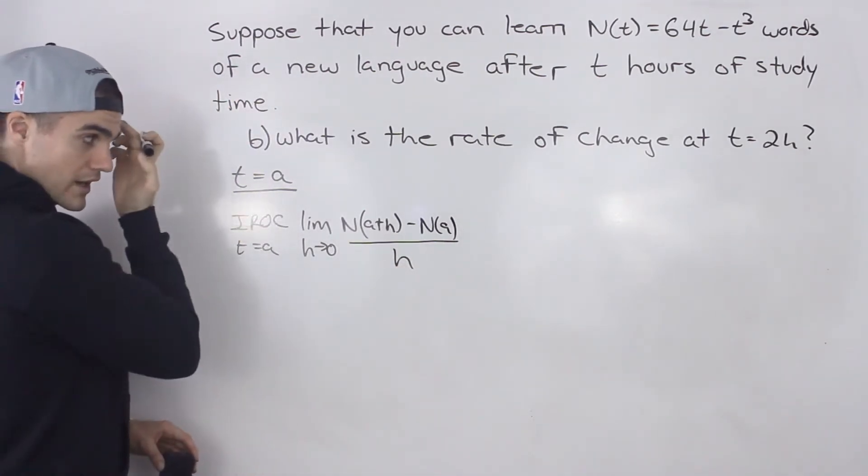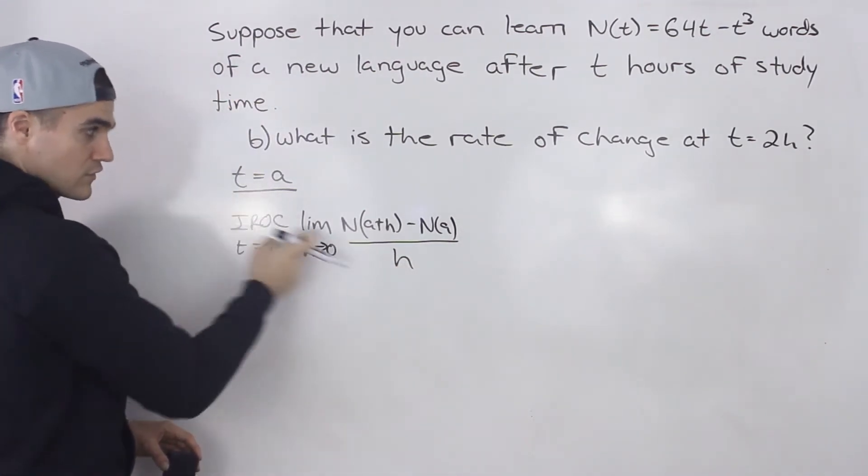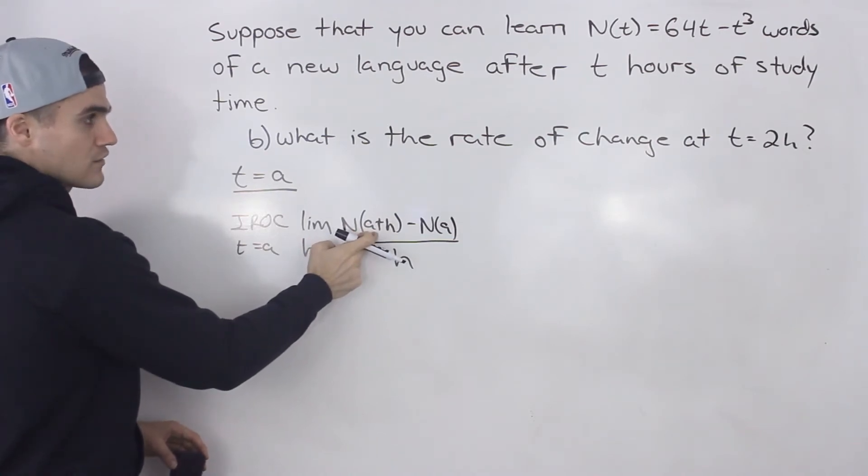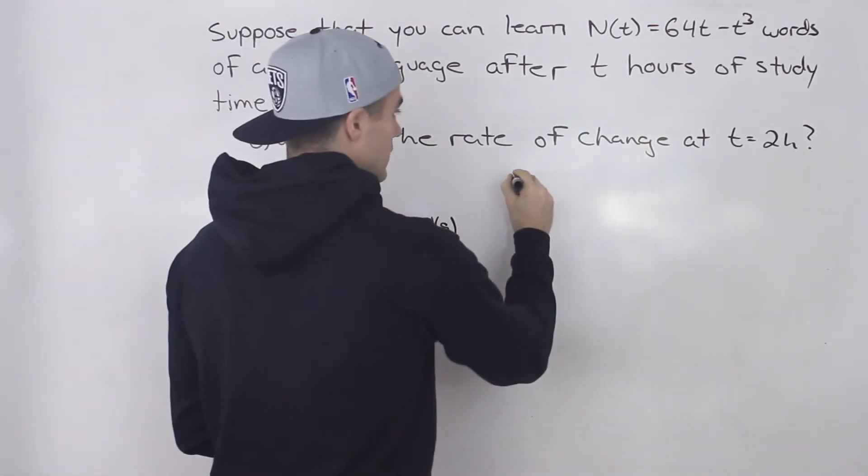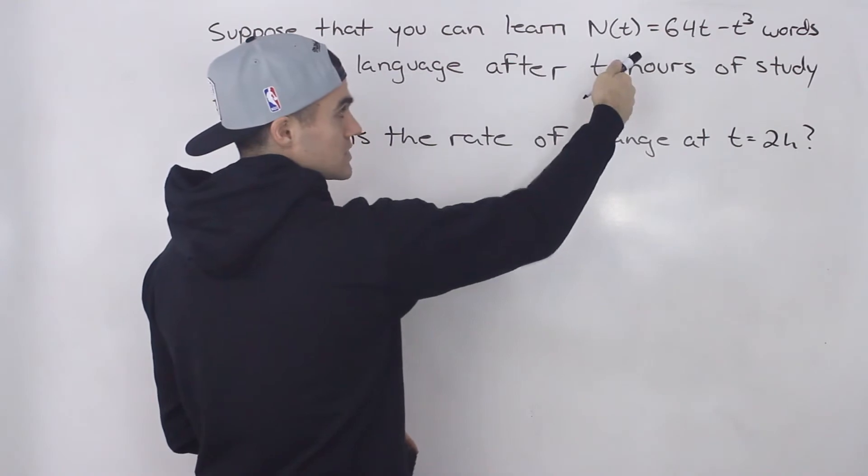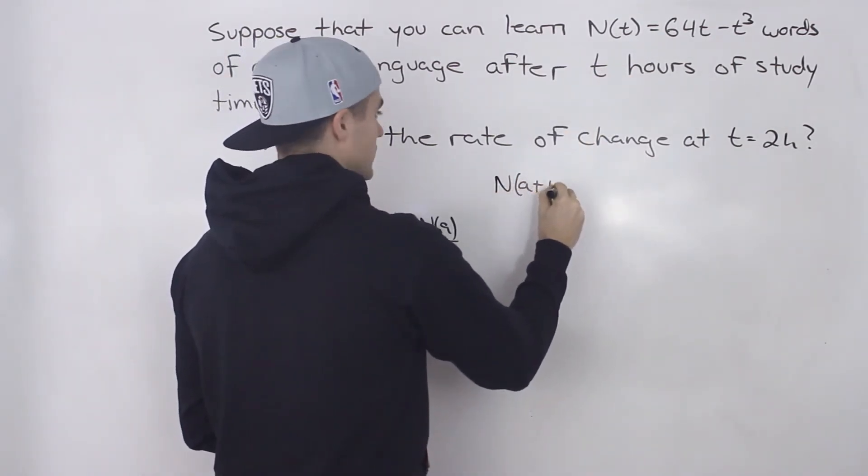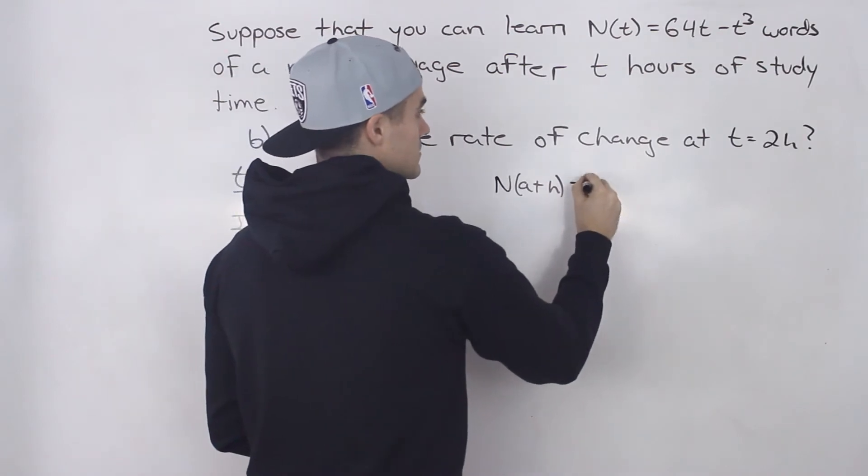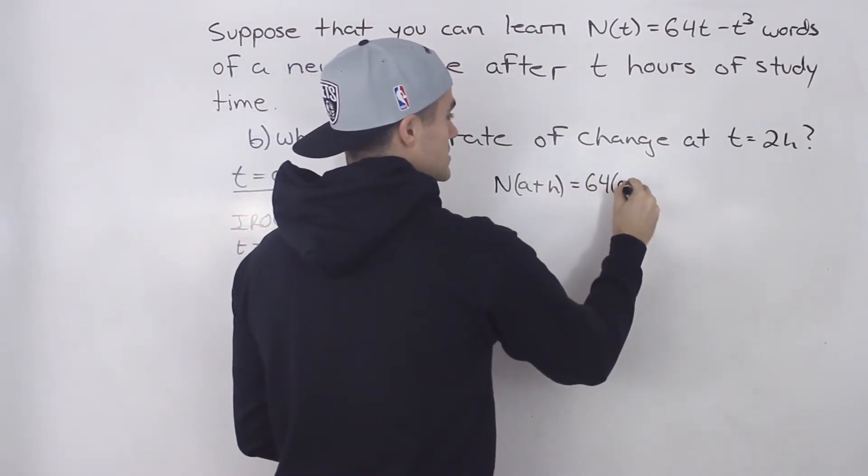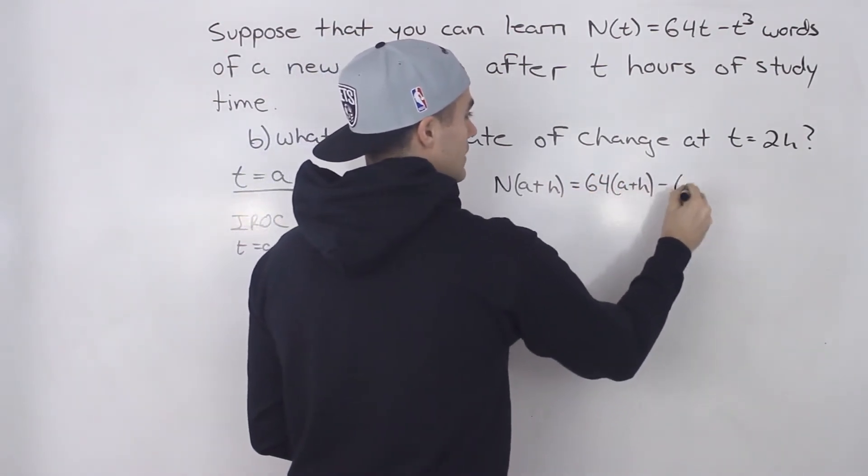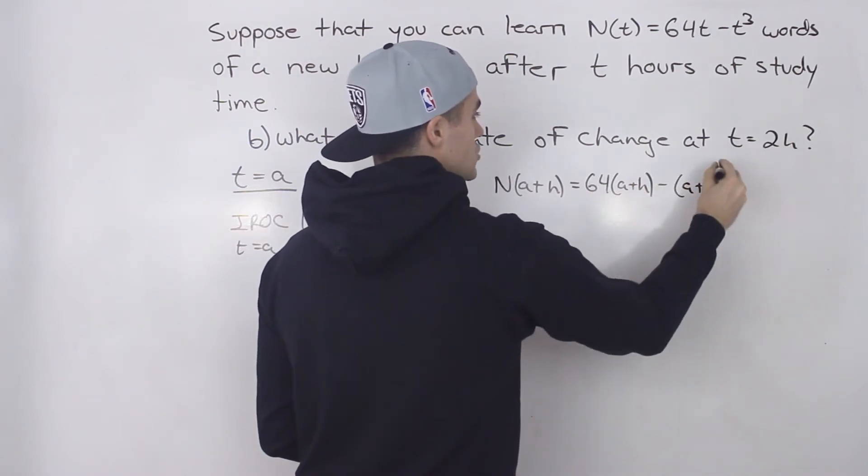So what we're going to have to do is we're going to have to figure out an expression for N of a plus h. So let's do that on the side. We know N of t is 64t minus t cubed. So we know N of a plus h is going to be 64 times (a+h) minus (a+h) cubed.